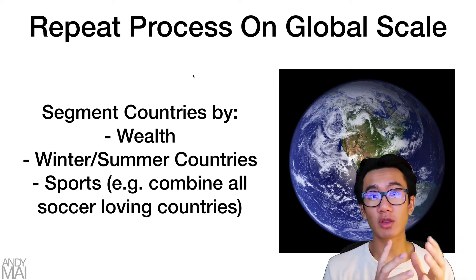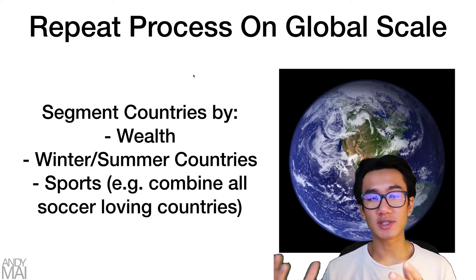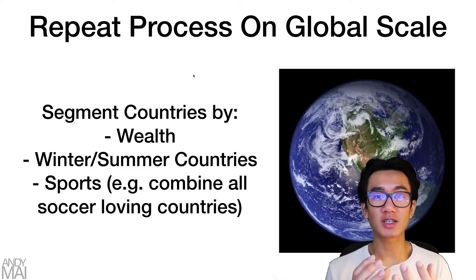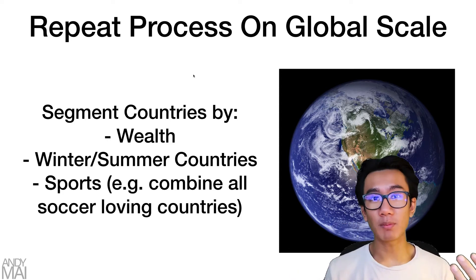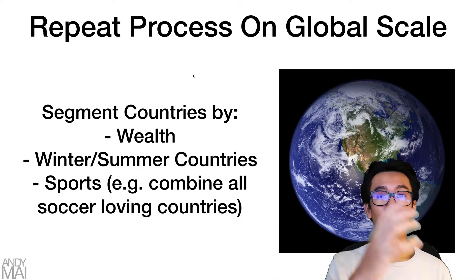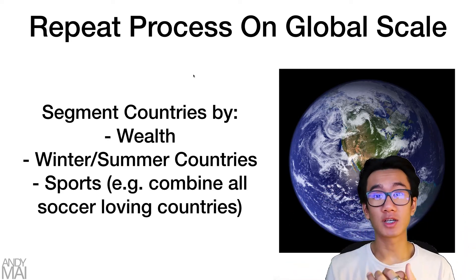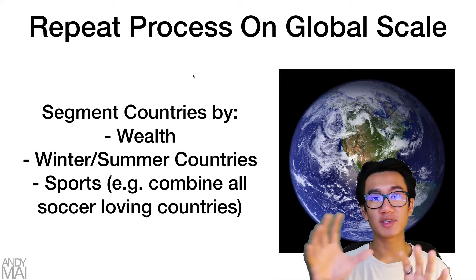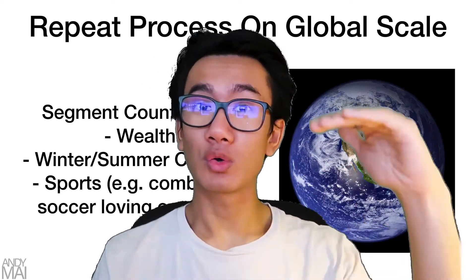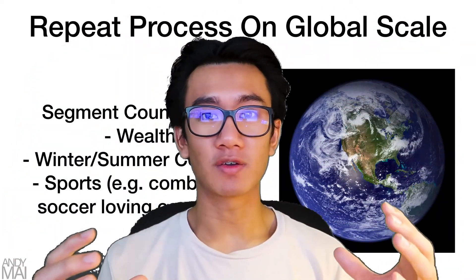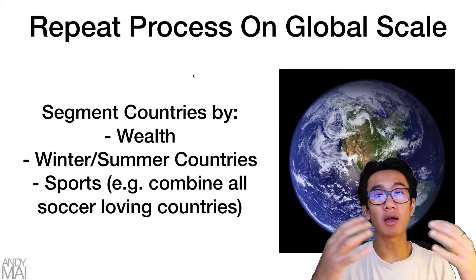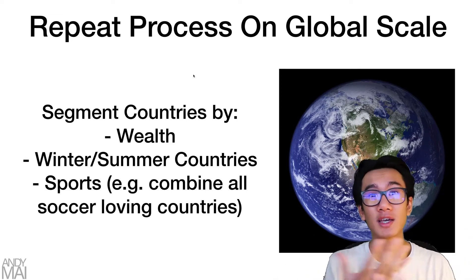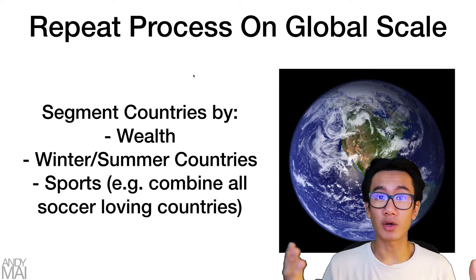You can repeat this whole process on a global scale. Segment countries by wealth — have all the first-world countries in one group and sell them more expensive items. Segment by winter versus summer countries: put Germany, Canada, Alaska, and Iceland together for winter products, and put Australia, Dubai, and America together for summer products. You can also segment by sport — combine all countries that love soccer, like the UK and Australia, and sell them soccer-related products.